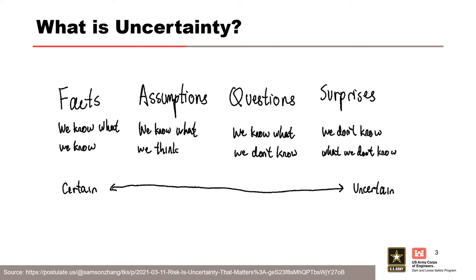So what is uncertainty? I'm sure a lot of you have seen the infamous 'we know what we know, we know what we think we know, we know what we don't know, but we don't know what we don't know.' These different factors fall on a continuum from facts to surprises. We're trying to account for all of those within our analysis to verify our results and avoid situations like Vajont Dam, where we had great assumptions that turned out to be totally wrong.